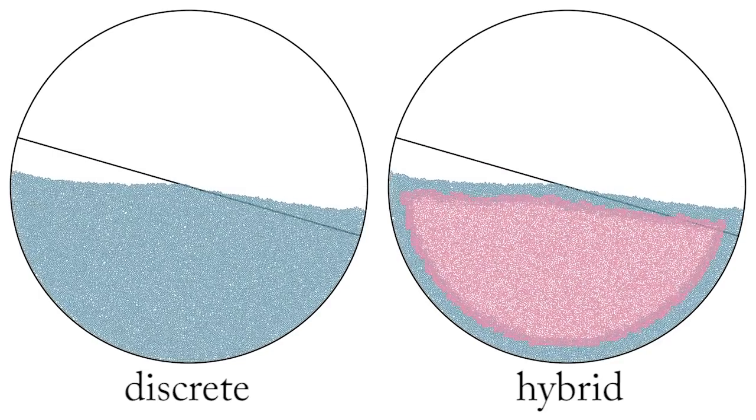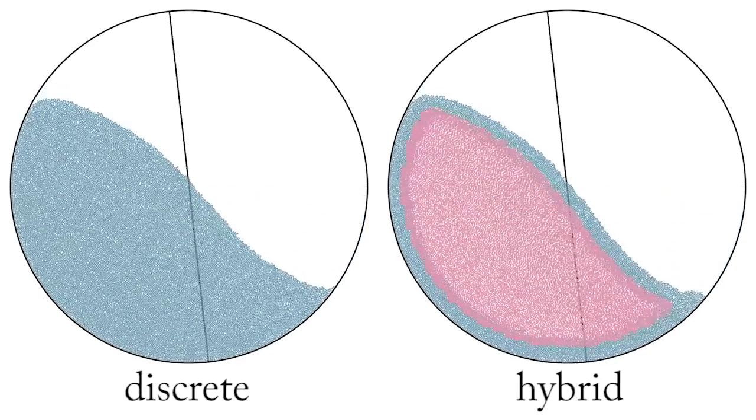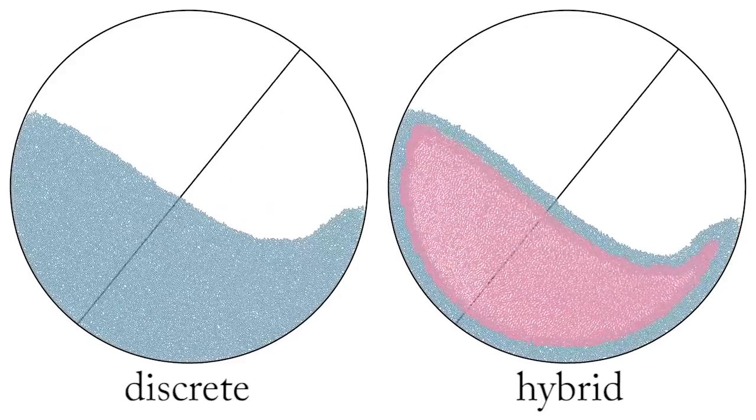A grain filled drum rotates, producing a characteristic S-shaped free surface. Hybrid and discrete simulations show good agreement.